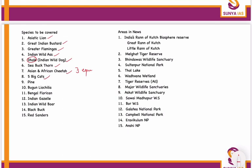With respect to the five big cats, you have to do their status and where they are found. Then with respect to other species: Spine, Blackbuck, Loricans, Indian Gazelle, Indian Wild Boar, Red Sandalwood. Make a comparative chart of the status of Indian Wild Boar, Indian Wild Dog, and Indian Wild Ass.